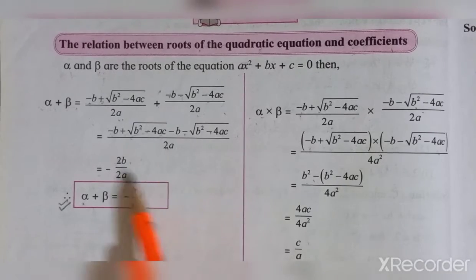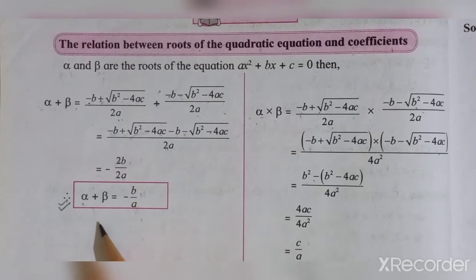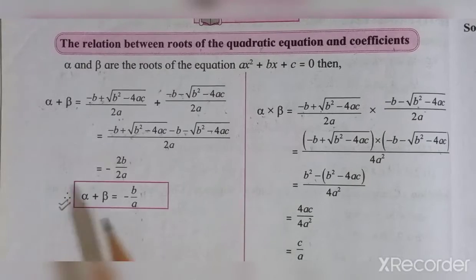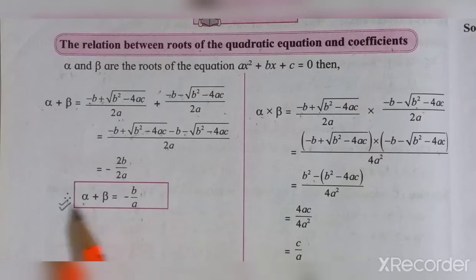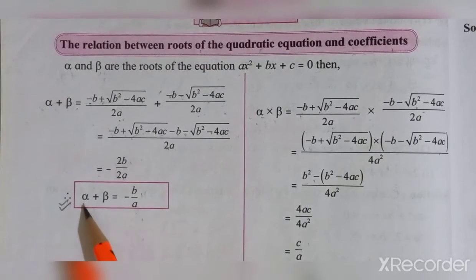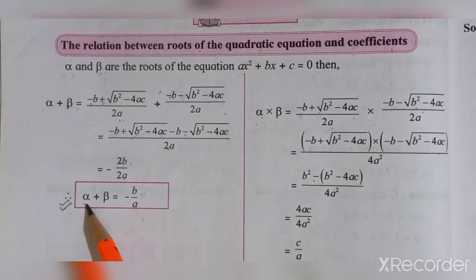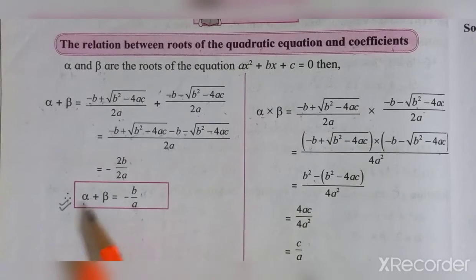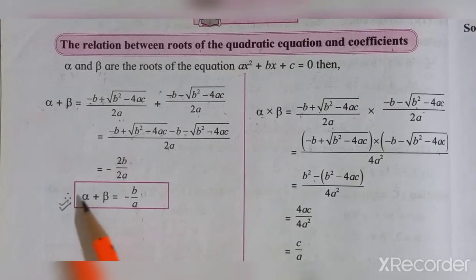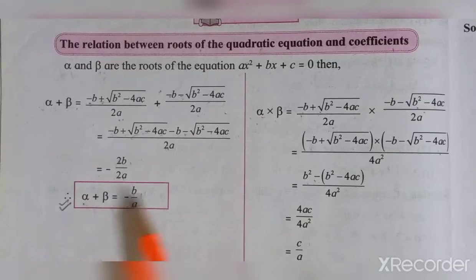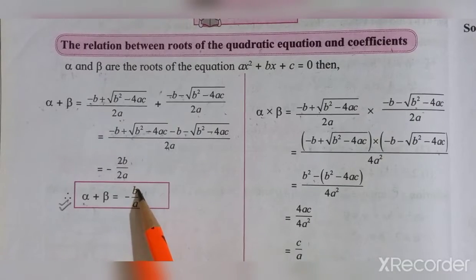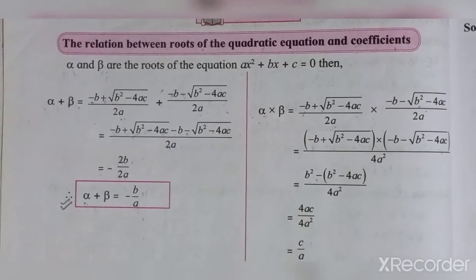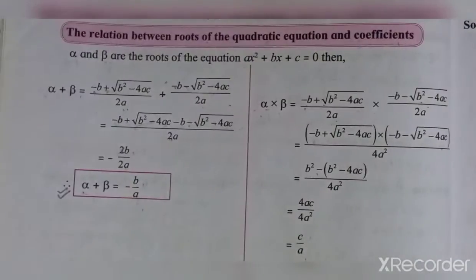You have to use this formula in cases where any alpha or beta is asked — for example, find alpha when beta is given, or when the values of b and a are given and you have to find one of them.